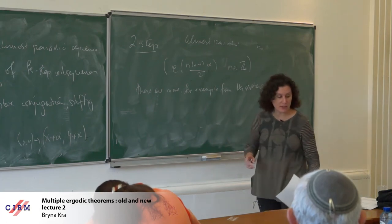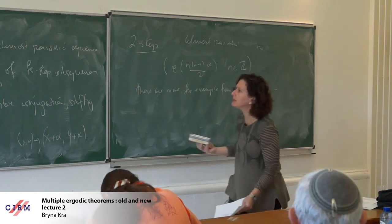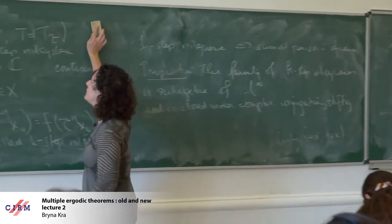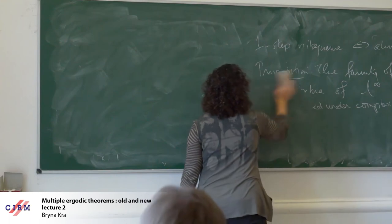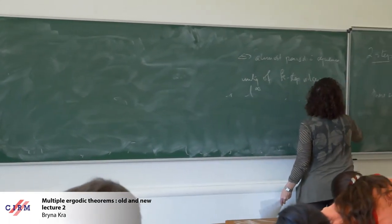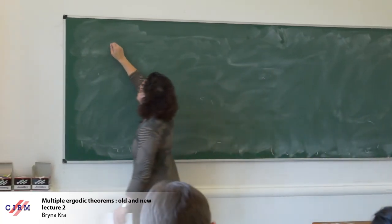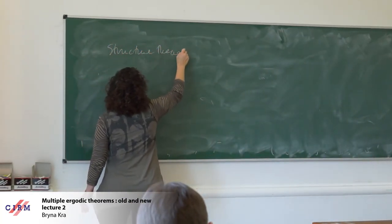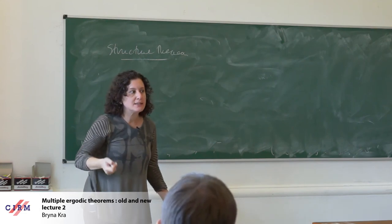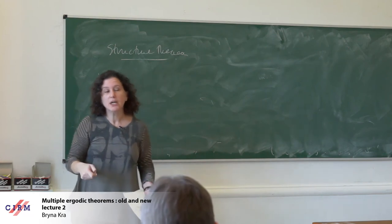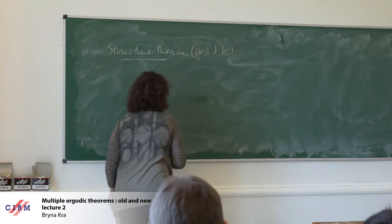Let me reformulate the structure theorem in terms of nil sequences. Remember the way I phrased the structure theorem before: it said that if you want to find a factor controlling the averages, what it is an inverse limit of nil systems — so you have to project everything down to the appropriate step of inverse limits of nil systems. This is just a rephrasing using this terminology.